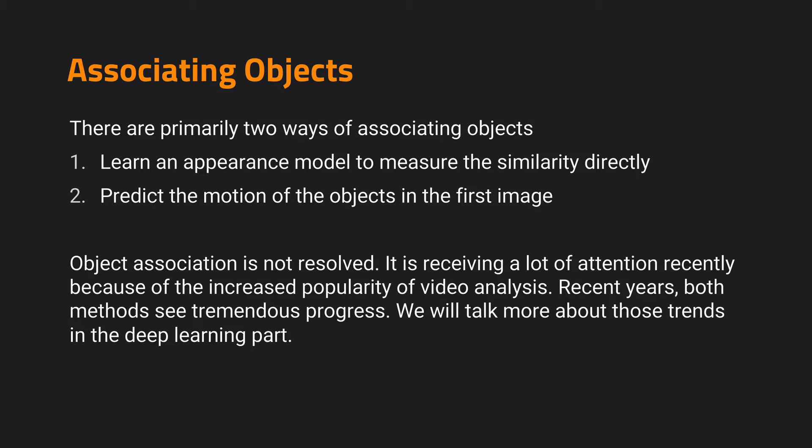After we detect an object, we need to associate them together and track them across time. There are currently primarily two ways of associating objects. The first is to learn an appearance model to measure similarity directly, which has also been commonly used in traditional tracking by detection literature. Another way is given an object in the first frame and proposals in the second frame, to detect its motion in the future frames and then use this motion information to associate the object. Object association is the most critical part in tracking multiple objects, and therefore receives a lot of attention, especially recently because of the increased popularity of video analysis and availability of video data.